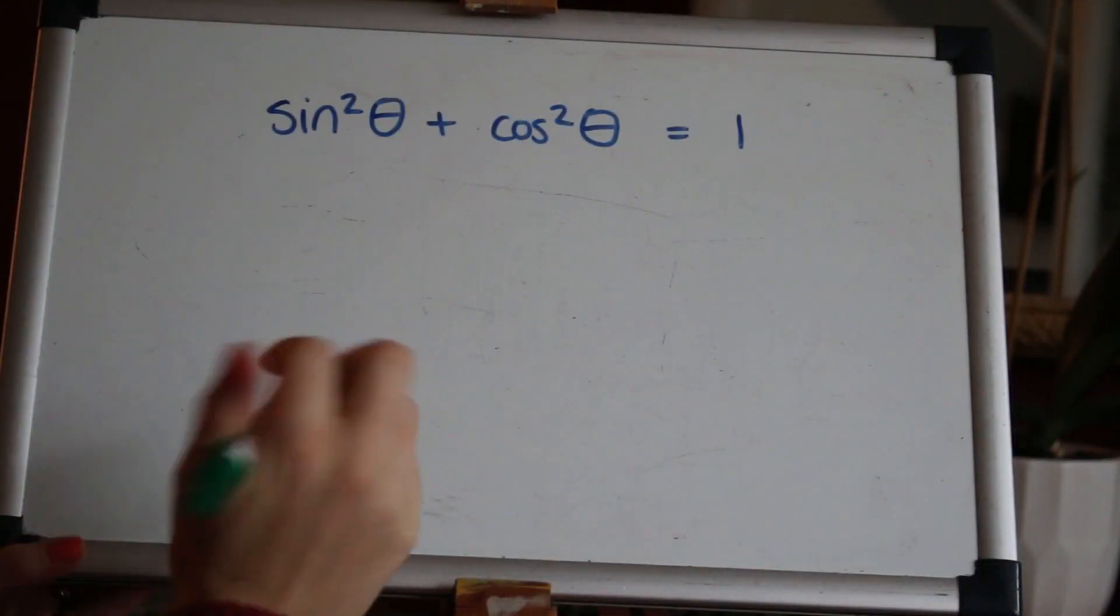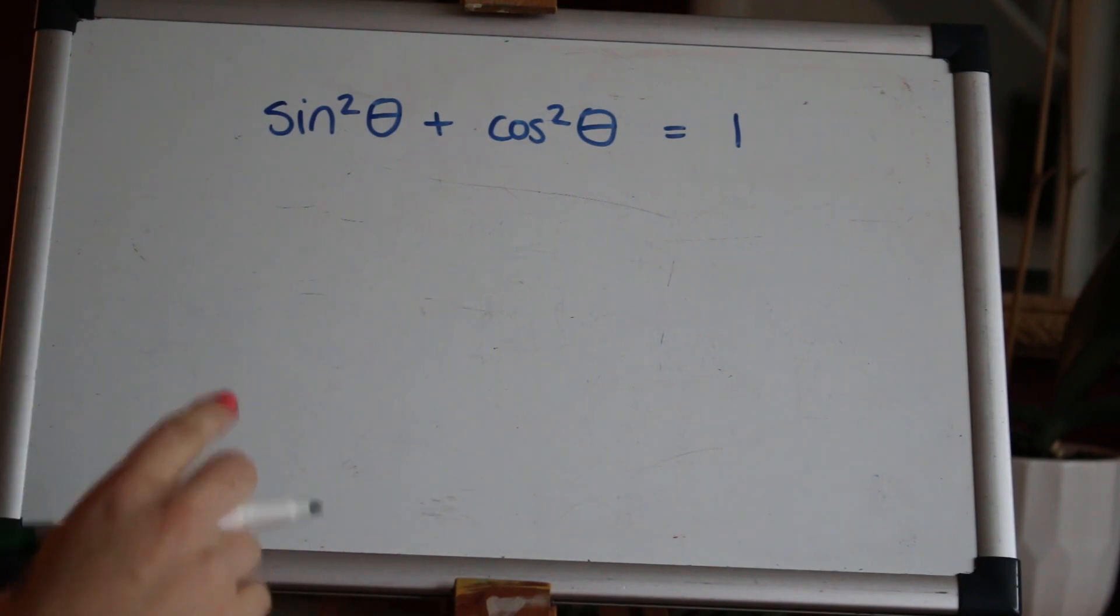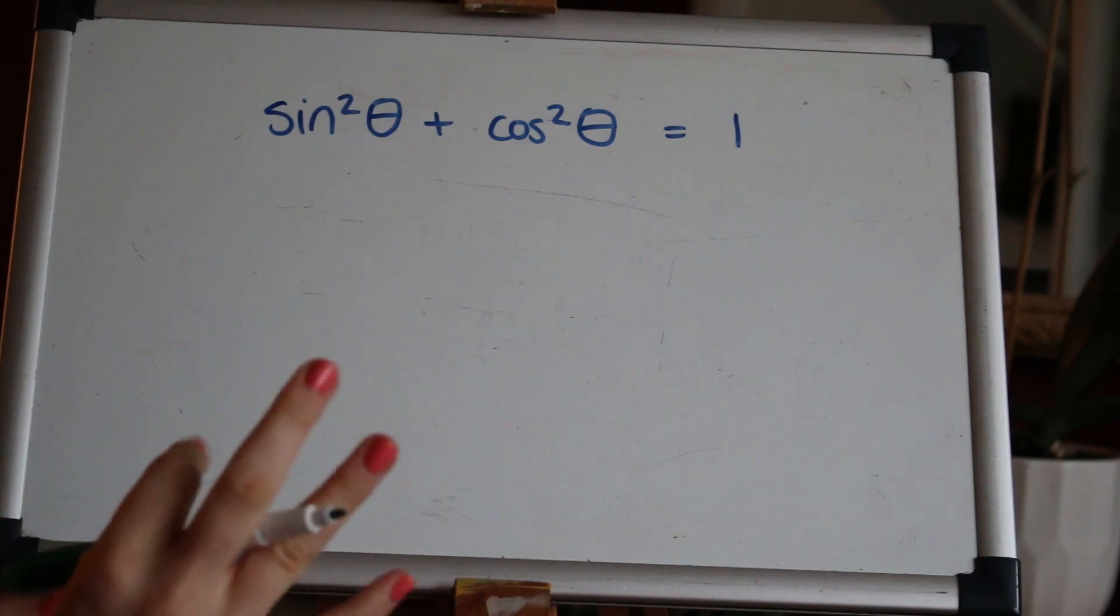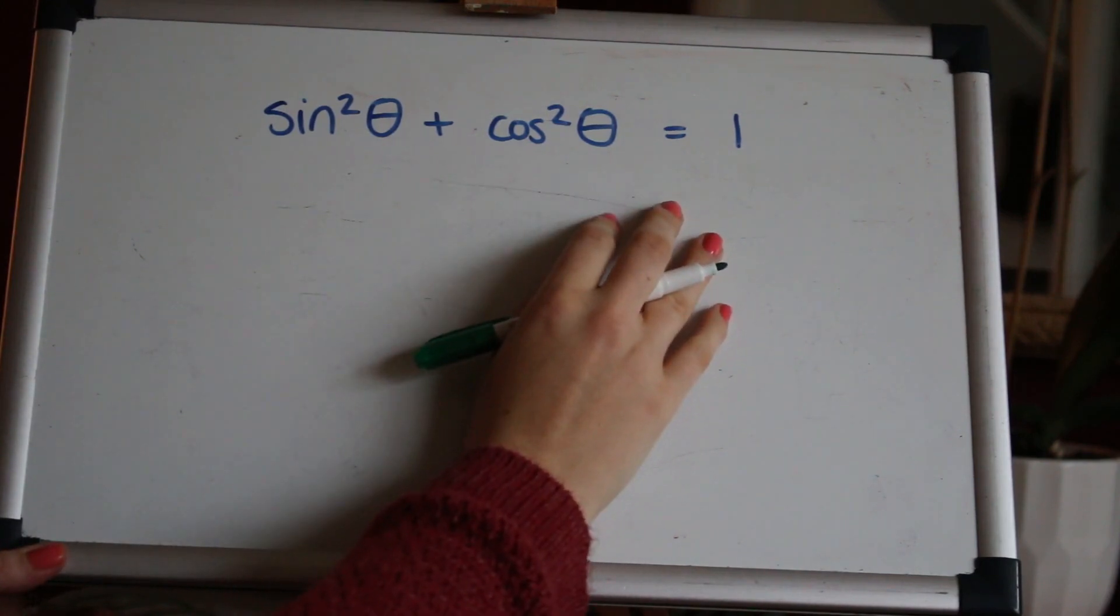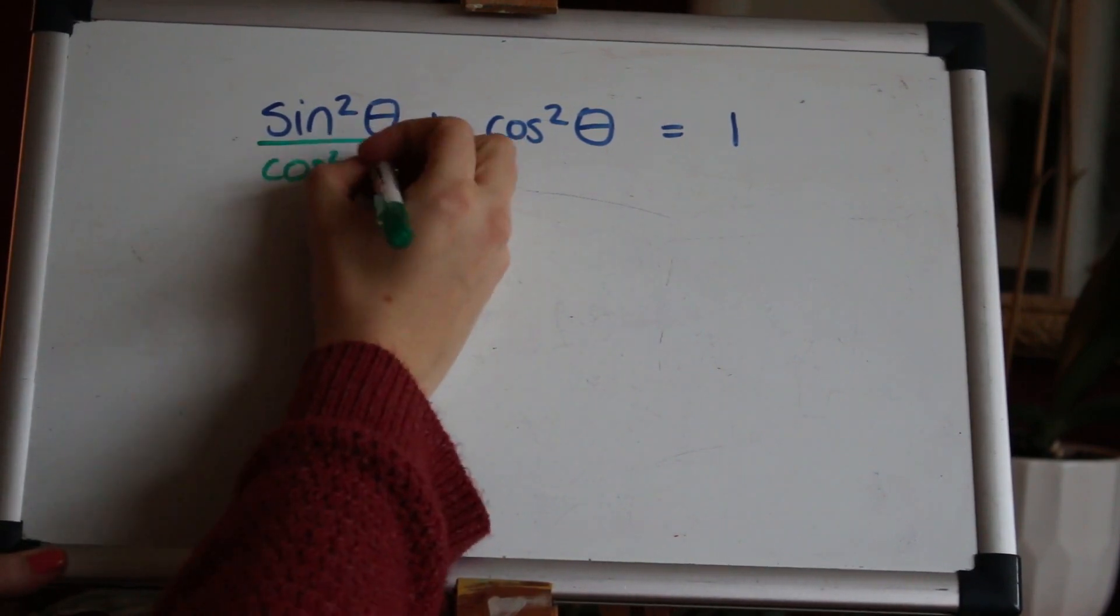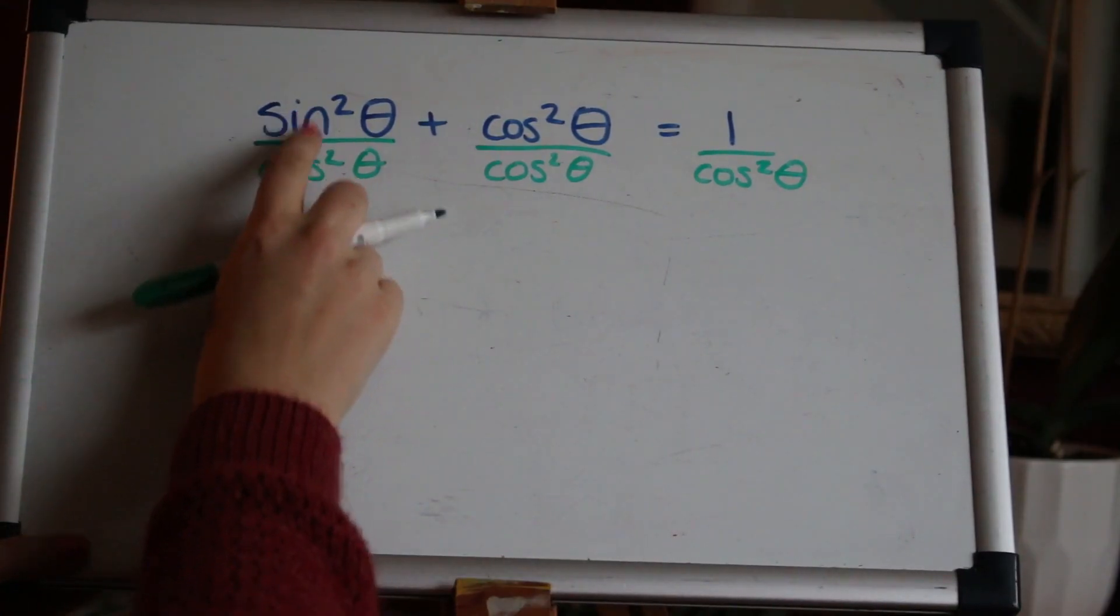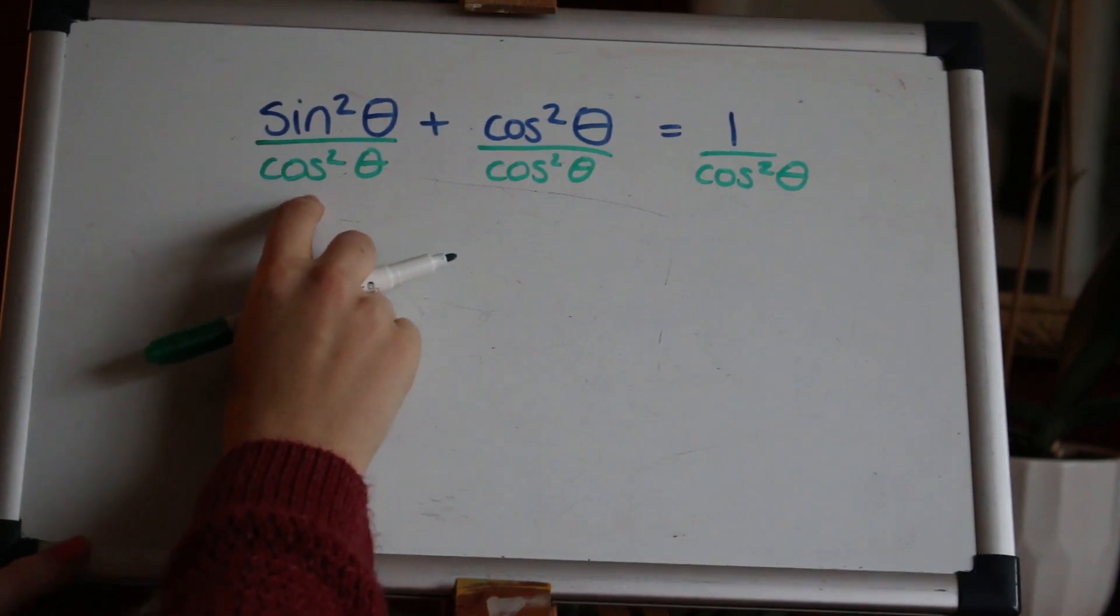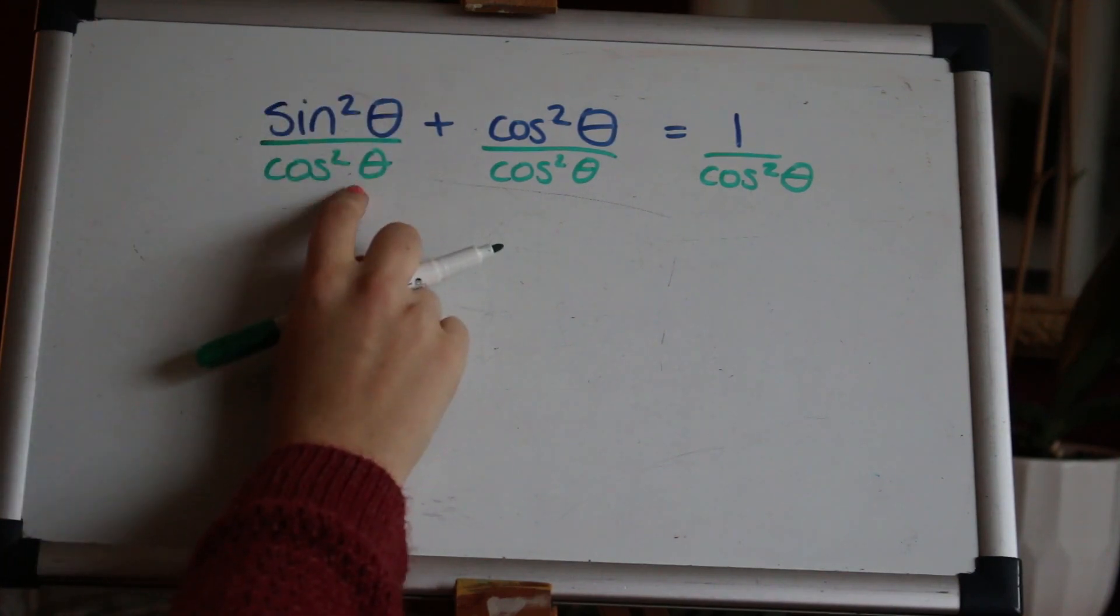If we start with this basic identity we can derive two further identities using cosec, sec and cot. I'm going to show you how to do that now. So if we first of all divide everything by cos²θ then what we'll have here is (sin²θ/cos²θ) and sine over cos as we know is the same as tan, so this here will be tan²θ.